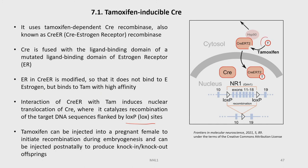The moment tamoxifen binds, it will be transported into the nucleus and the system will start working based on the presence of LoxP sites. This tamoxifen can be injected into a pregnant female to initiate recombination during embryogenesis, and can be injected postnatally to produce knockin and knockout offspring. Similarly, we also have tetracycline-inducible expression systems, or TET-inducible expression systems.